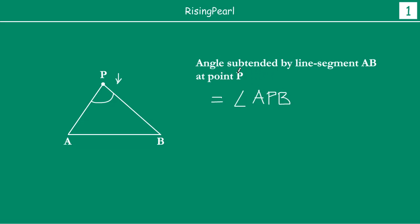So, Dostho, we just want to make sure that you understand this. The angle subtended by a line segment at point P — matlab, joh line segment hai, woh at point P pe, what is the angle that it will have? Matlab, agar aap P pe khadhe ho, if you look back at the line segment, what will be the angle at point P? The only way to find out is to join AP and PB. This angle basically gives you the measure of the entire line segment AB as seen from point P. This is what we mean by angle subtended by line segment AB at point P.